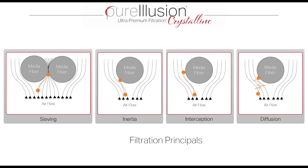How is that possible? It seems counterintuitive. To understand, we need to look at filtration principles, starting with sieving. Sieving is like when we were young on the beach, putting sand in a sieve, shaking it, and watching the sand fall through while larger objects remained on top. But this is not what we do in HEPA filtration, because the particle size would require media fibers to be so close together that it would be very restrictive on airflow.